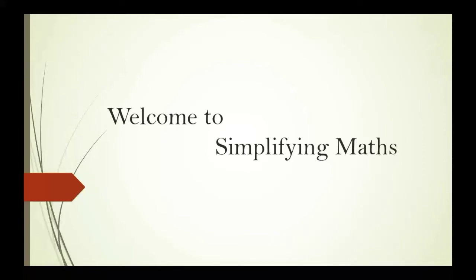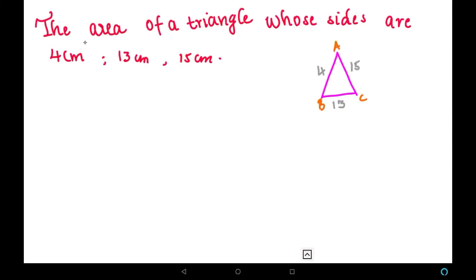Friends, welcome to Simplifying Math. Here we are going to solve the problem that is the area of a triangle whose sides are 4 centimeters, 13 centimeters, and 15 centimeters. So the sides of the triangle are given and we have to find its area.